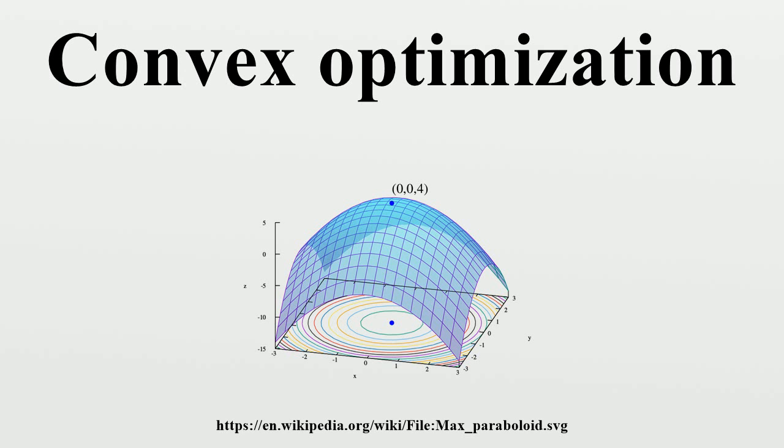Lagrange multipliers. Consider a convex minimization problem given in standard form by a cost function and inequality constraints, where, then the domain is. The Lagrangian function for the problem is for each point that minimizes over. There exist real numbers, called Lagrange multipliers, that satisfy these conditions simultaneously.